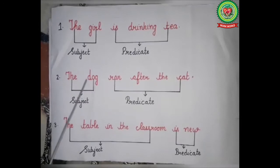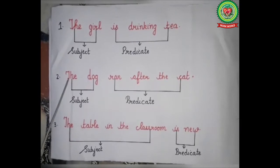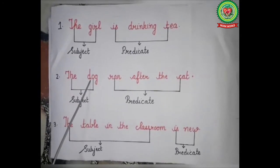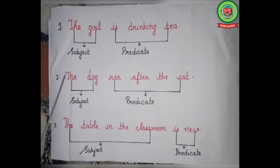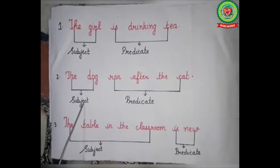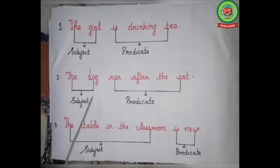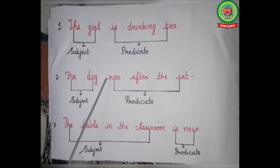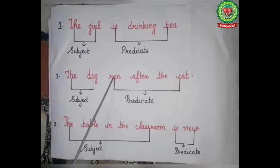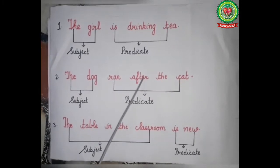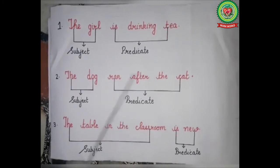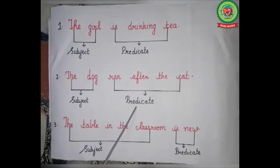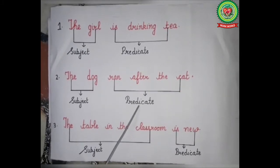Number two: 'The dog ran after the cat.' About whom we are talking in the sentence? The answer is 'the dog,' so 'the dog' is the subject of the sentence. What we are talking about the dog? The answer is 'ran after the cat,' so 'ran after the cat' is the predicate of the sentence.